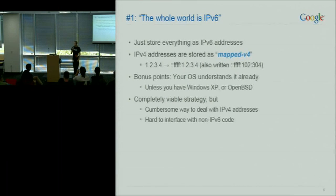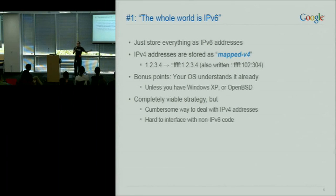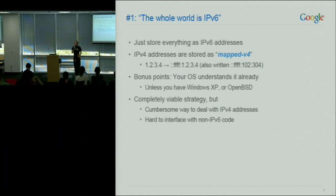The problem is, of course, if you don't have IPv6 on the machine or if you're writing client software, this doesn't work. And the much bigger problem is if you have an interface with code that is not ready — this doesn't work. If I have a sockaddr_in6, I cannot pass this off to a function that just takes a sockaddr_in.